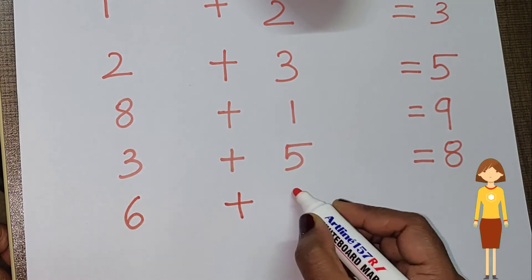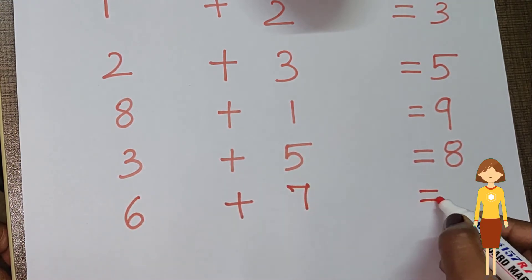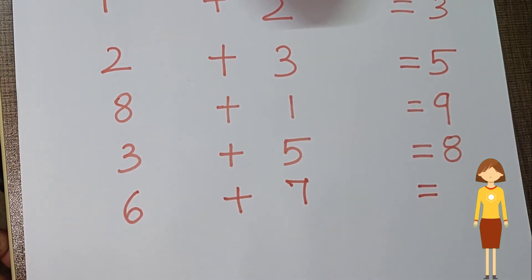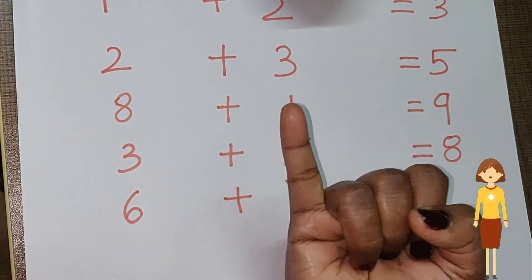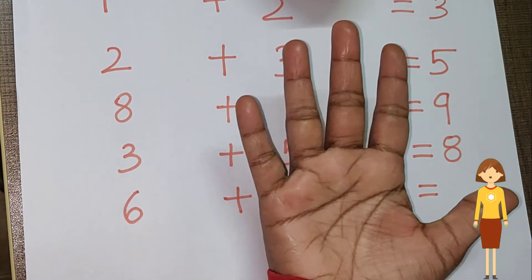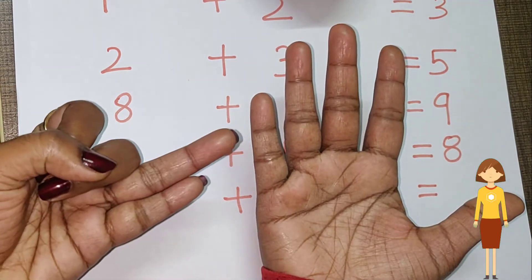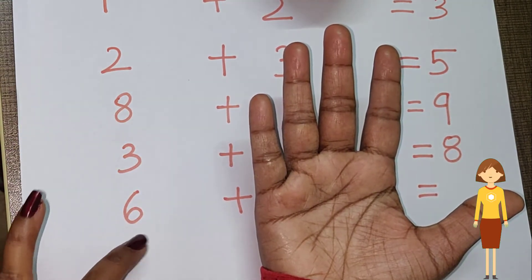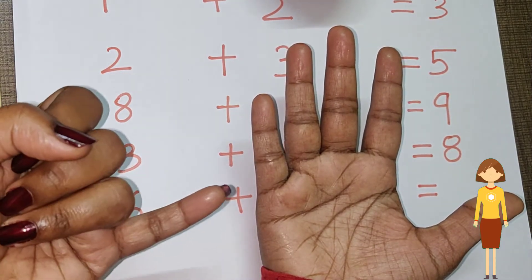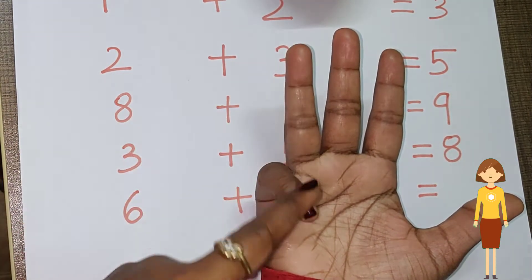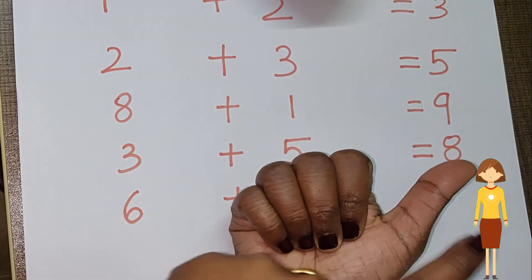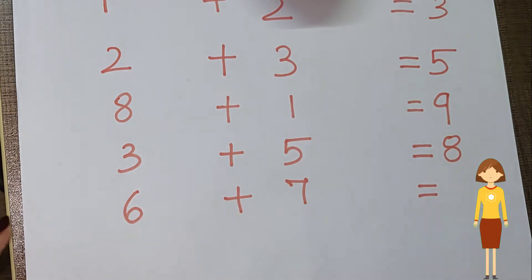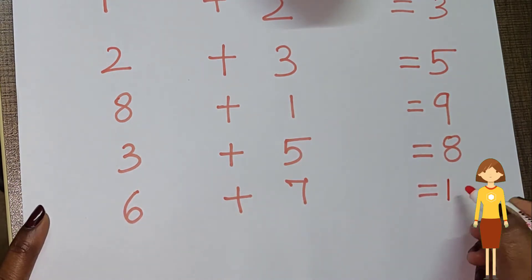Another problem: six plus seven is equal to dash. Six we are keeping in mind and seven in fingers — one, two, three, four, five, six, seven. After six: seven, eight, nine, ten, eleven, twelve, thirteen. So the answer is thirteen. You can also practice it.